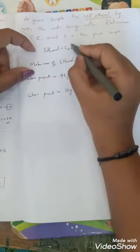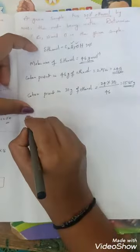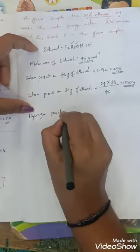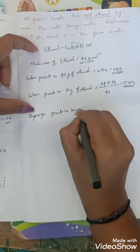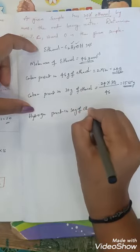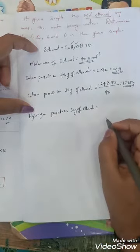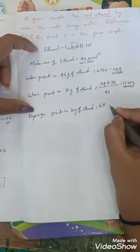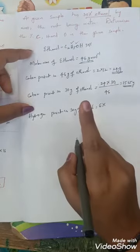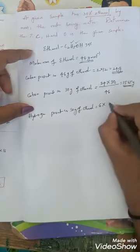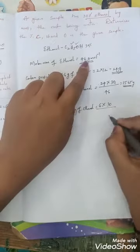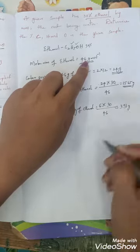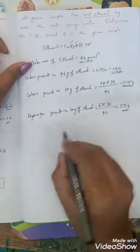In 30 grams of ethanol, we also have hydrogen and oxygen. Hydrogen present in 30 grams of ethanol: how many hydrogens are present? 5 plus 1 equals 6. So 6 into 1 (atomic mass of hydrogen) into 30 grams of ethanol divided by molar mass 46. By calculating all this you will get 3.91 grams. That is the presence of hydrogen in 30 grams.